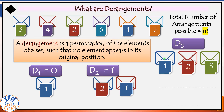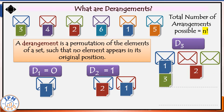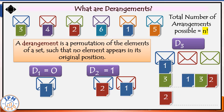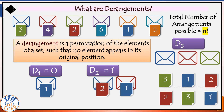For three objects, none of which should occupy their original intended position: in envelope one we can't place letter one, so either letter two or letter three goes here. Supposing we place three here, then two must move from its original position — it goes here and letter one must occupy the remaining envelope. Supposing we place two here, then three moves from its original position — it goes here and letter one occupies the other envelope. So two possibilities exist for deranging three objects, and therefore D3 equals two.